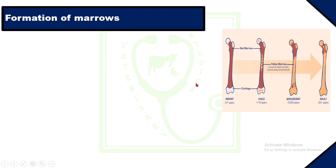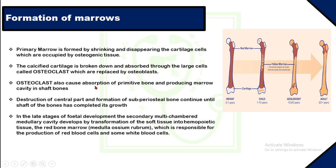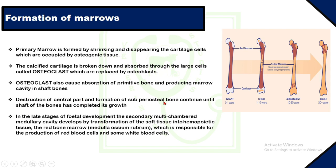The formation of marrow: marrow means spaces or cavities found in bones, used for hemopoiesis or storage of fats. Primary marrow is formed by the shrinking and disappearance of cartilage cells, which are occupied by osteogenic tissues. The calcified cartilage is broken down and absorbed through osteoclast cells, which are replaced by osteoblasts. Osteoclasts also cause absorption of primitive bone and produce the marrow cavity in the shaft. In the late stage of fetal development, the secondary multi-chambered medullary cavity develops, transforming into hemopoietic tissue — the red bone marrow — responsible for production of WBCs, RBCs, and platelets.